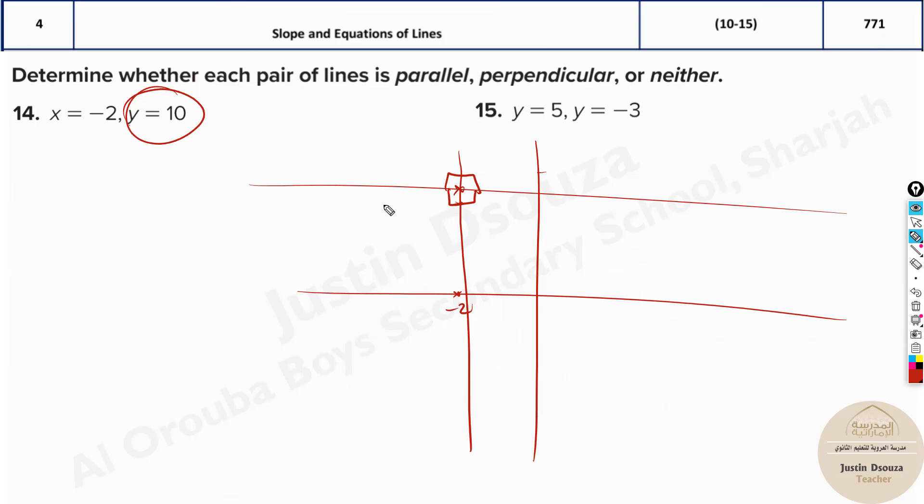Why? Because you have x equals negative 2 and y equals 10. In this vertical line, there is no y-term, so the slope is undefined (90 degrees). In the horizontal line, there's no slope. What about these? y equals 5 and y equals negative 3. Two flat lines. They'll never touch each other. They're always equidistant. So this is parallel. Easy way to remember: if you have x equals a number and y equals a number, they're always perpendicular to each other. They form a cross at 90 degrees. But if it's the same axis, like x equals negative 2 and x equals 2, they're parallel. They will never cross each other.